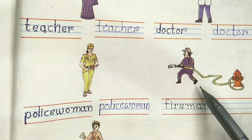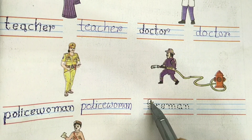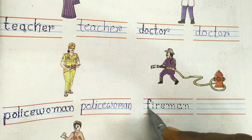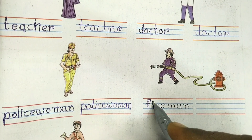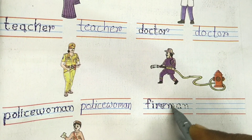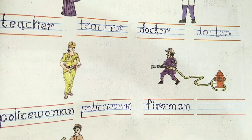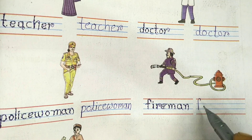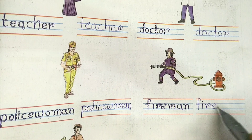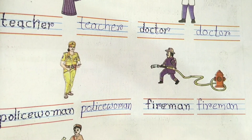This is a picture of fireman. First of all, we will trace the spelling of fireman. F-I-R-E-M-A-N. Fireman. Now we will write fireman.